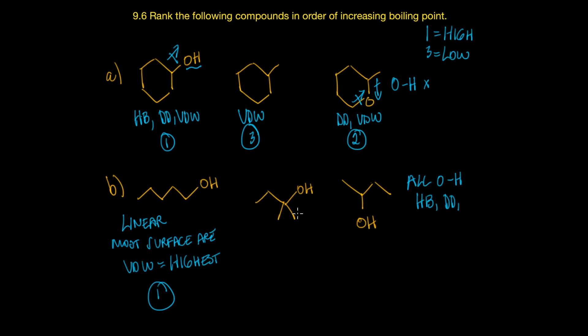Now this one in the middle has the most branching. It's like a crumpled up piece of paper with the least surface area. It's most branched, which means least surface area, and its van der Waals forces are going to be the lowest. So this is the third place molecule here.